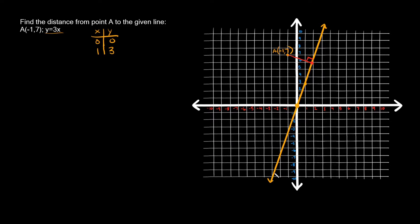First, let's find the slope of the original line. We can use slope-intercept form: y equals mx plus b. Our equation is y equals 3x, which already fits this form with m equal to 3 and b equal to 0. So the slope of this line is 3.